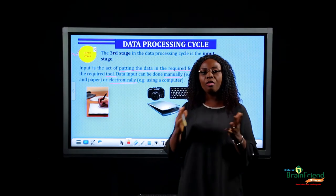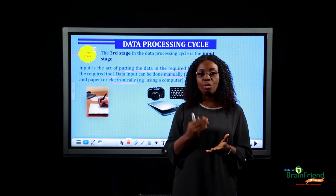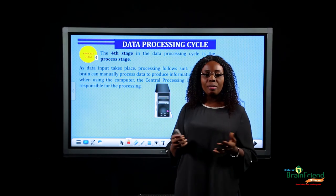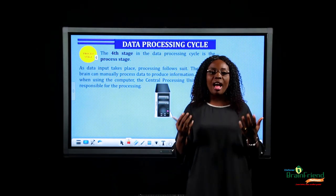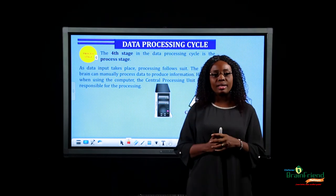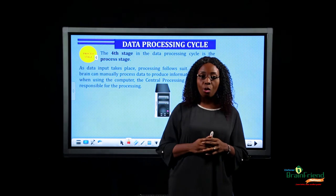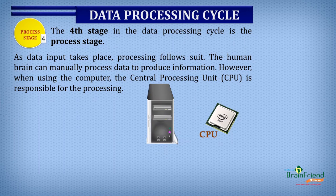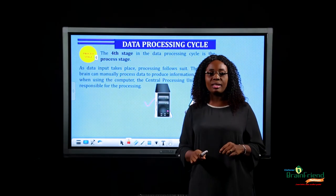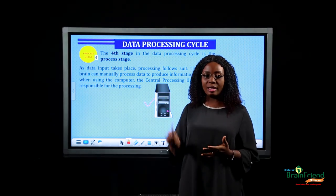After inputting, we move to the process stage. As humans receive data through our five senses, our brains automatically process the data. But when using the computer to process, the central processing unit is responsible. The central processing unit is found in the system unit. Once you input data using the different input devices, the central processing unit processes the data.